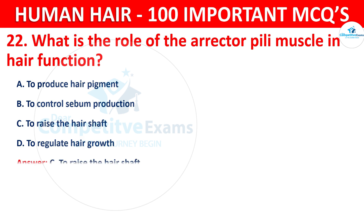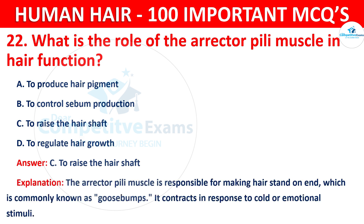The correct answer is C — to raise the hair shaft. The arrector pili muscle is responsible for making hair stand on end, commonly known as goosebumps. It contracts in response to cold or emotional stimuli.